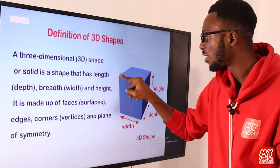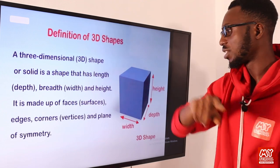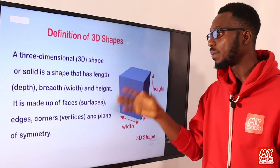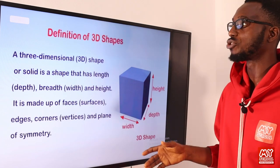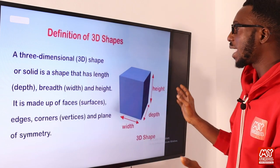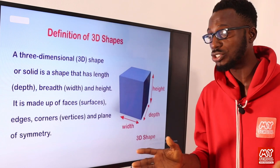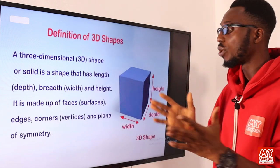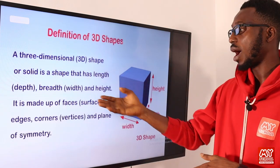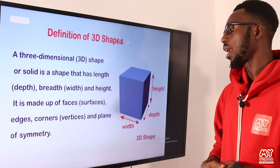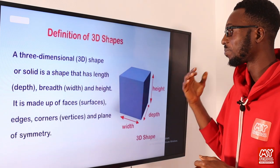You can see your edge and there is also a plane of symmetry. Basically, a 3D shape has about three dimensions — your length, your width, and your height.